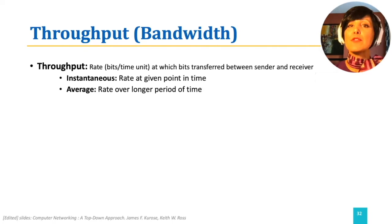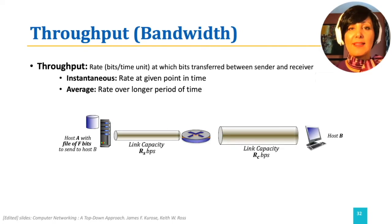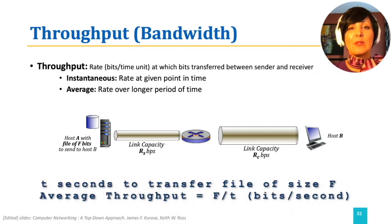Assume we have two hosts, A and B, and want to send a file with size S from host A to host B. The instantaneous throughput might vary over time. Now, if it takes T seconds to send this file of size S from A to B, the average throughput for sending file S from A to B will be F divided by T bits per second.